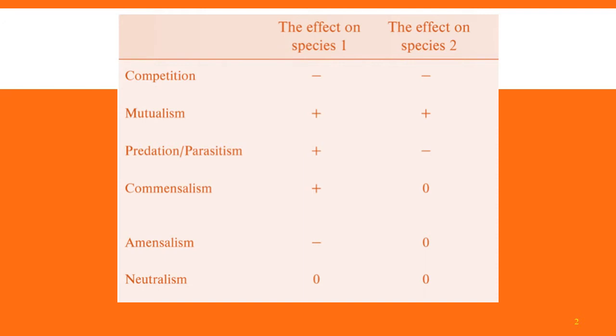This table at the beginning of this chapter looks at what we call these different types of interactions. Competition is where two species are interacting and they are both harming each other in some way. For example, a hyena and a lion fighting over a carcass — no matter who wins, they've both expended energy in fighting over that carcass.